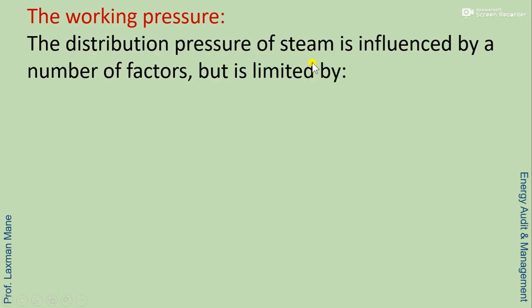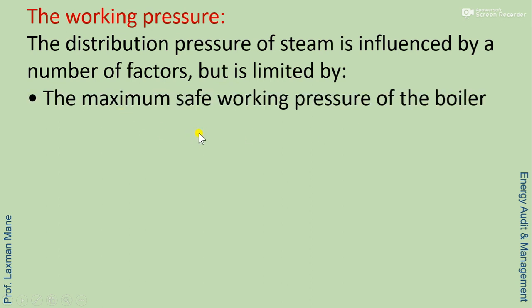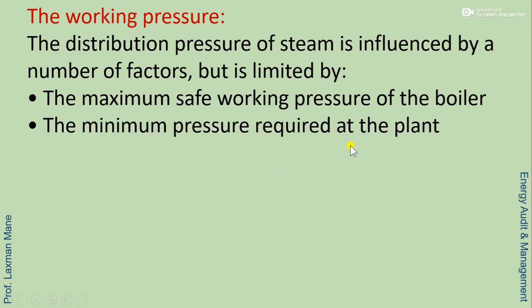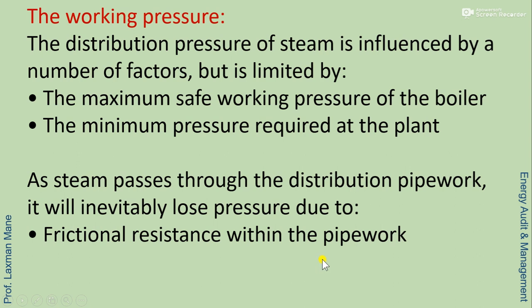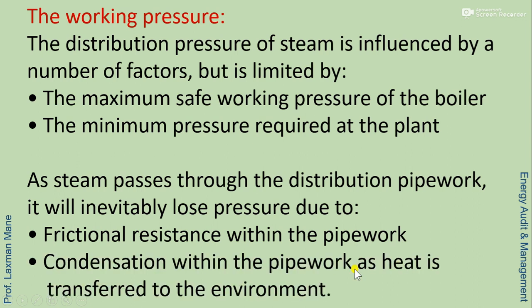The working pressure and distribution pressure of steam is influenced by a number of factors, but it is limited by the maximum safe working pressure of the boiler and the minimum pressure required at the plant. As steam passes through the distribution pipework, it will inevitably lose pressure due to friction resistance within the pipework and condensation within the pipework as heat is transferred to the environment.